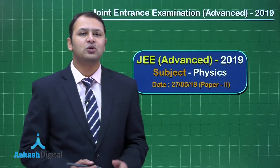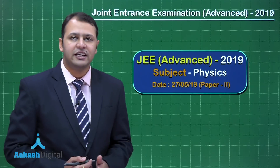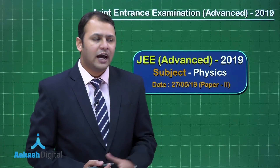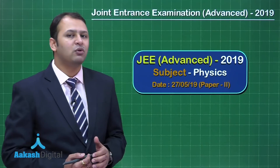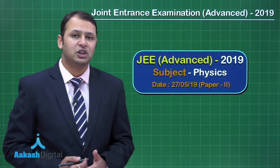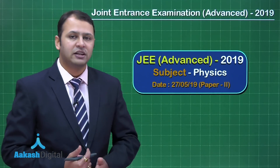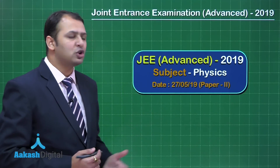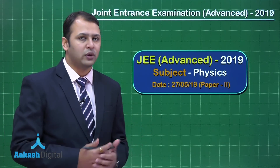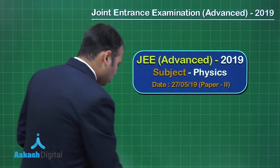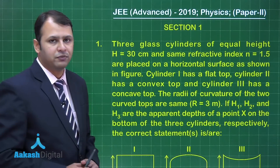Hello friends, I welcome you all to video solutions of JEE Advanced 2019 Physics Paper 2. As we move through the paper, you will see it ranges from moderate to tougher sections due to linear calculations and tricky applications. You will see more portions of Class 11 in this paper compared to Class 12. Let's take our very first question — question number one — starting with Section 1.